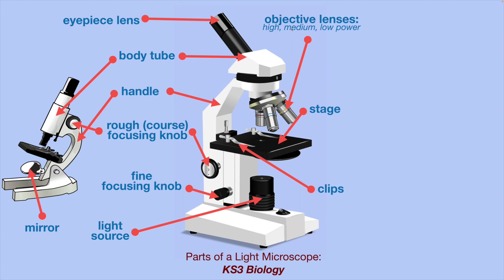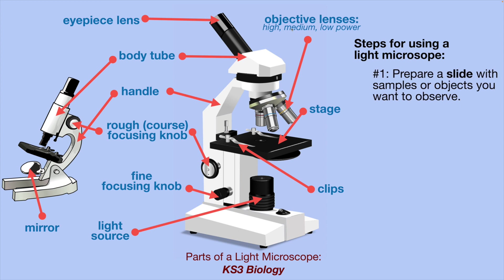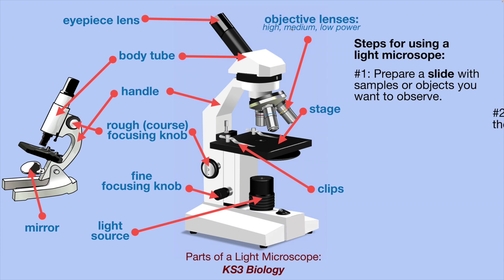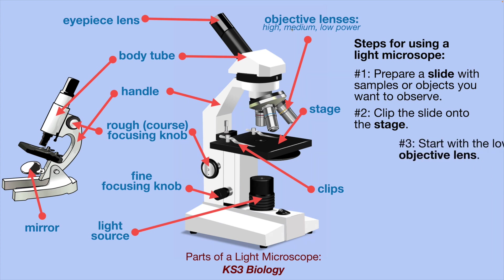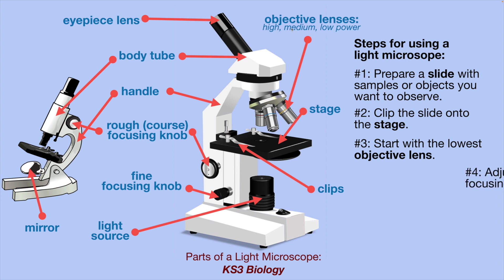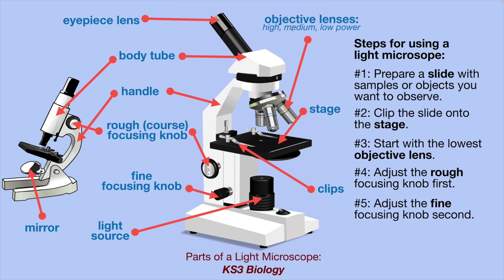Here are the steps — you might see some of these questions on your exam. Steps for using a light microscope: Step one, prepare a slide with samples or objects you want to observe. Step two, clip the slide onto the stage so it doesn't move around while you're trying to look at the very tiny things on it. Step three, start with the lowest objective lens, the lowest power. Then adjust the rough focusing knob first to get it as close to focused as you can. Then switch and adjust the fine focusing knob second to get a really clear picture.